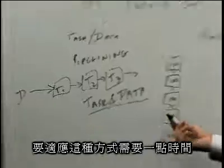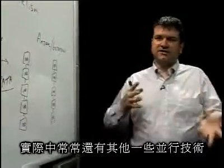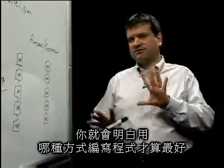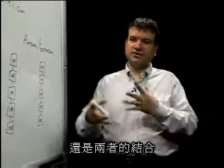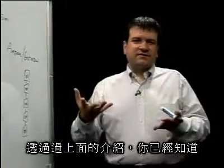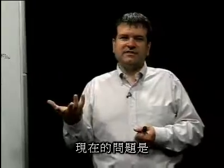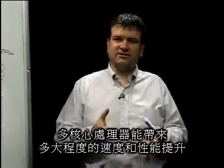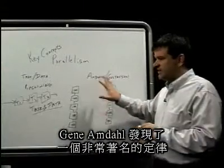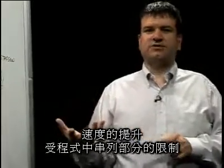This takes a little getting used to, and it's worth understanding where the parallelism is in your application. Usually there's both types of parallelism, and as you understand it, you'll figure out whether it's better to write your program for task parallelism, data parallelism, or both — perhaps pipelining. With that in mind, the question becomes how much speedup can you expect? How much performance are you going to get from multi-core processors? There's a very famous observation by Gene Amdahl, known as Amdahl's Law, which states that speedup is limited by the serial portions of your program — the portions that don't run in parallel.